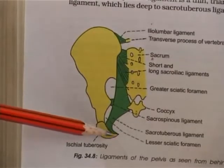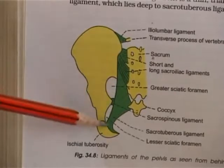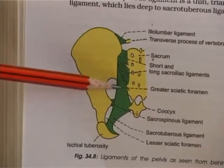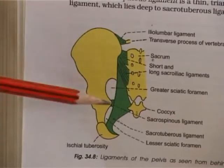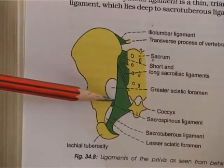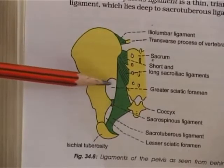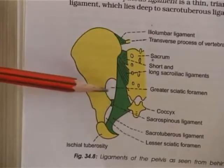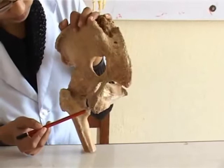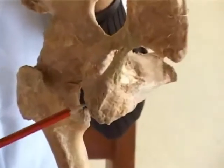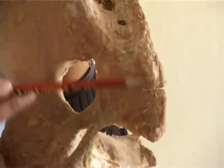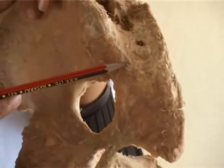Arising from the ischial tuberosity is a strong ligament, the sacrotuberous ligament. It passes up to the posterior superior iliac spine, posterior inferior iliac spine, and to the back of the sacrum. This specimen shows the ischial tuberosity and the sacrotuberous ligament going up to the sacrum, the posterior inferior iliac spine, and the posterior superior iliac spine.